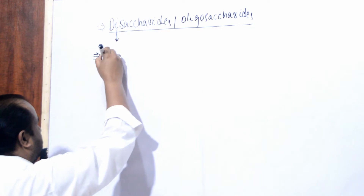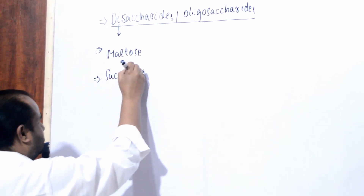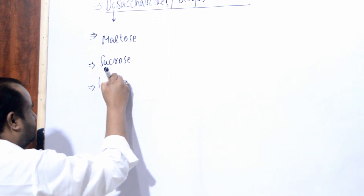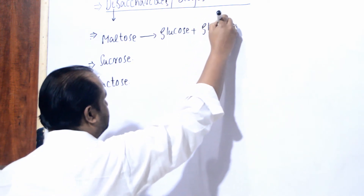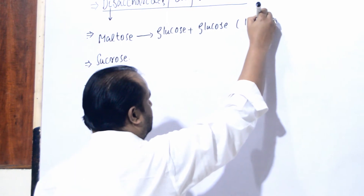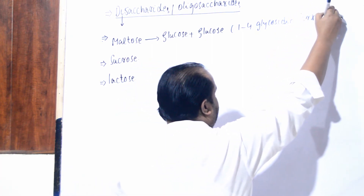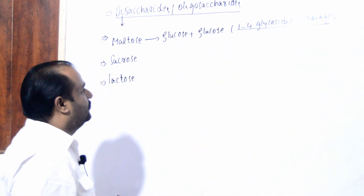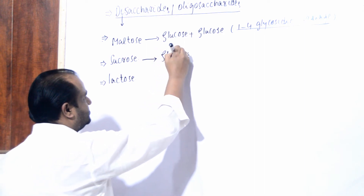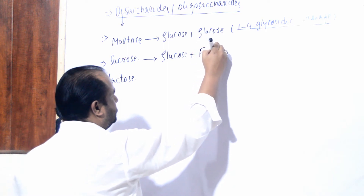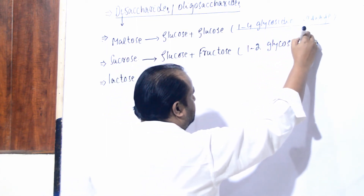Disaccharides - agar hum baat karein toh uski given examples: this is the maltose, that is the sucrose, and this is the lactose. In case of maltose: glucose plus glucose, and they have one-four glycosidic linkage. In case of sucrose, that is actually glucose plus fructose, and the linkage is one-two glycosidic linkage.